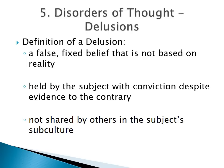What is a delusion? A delusion is a false, fixed belief that is not based on reality. It is held by the subject with conviction, despite evidence to the contrary, and this belief is not shared by others in the subject's subculture.